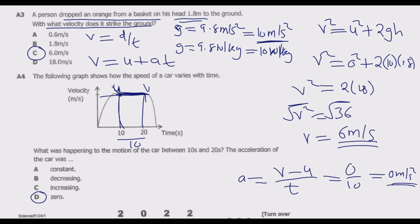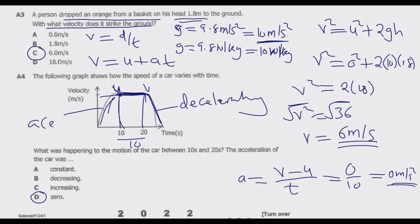Just to note: where the graph is falling, velocity is decreasing — this is deceleration. Where the graph is rising, velocity is increasing — this is acceleration, meaning velocity is increasing per unit time.